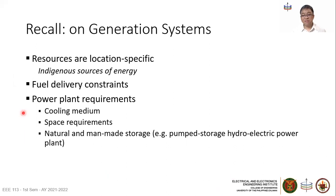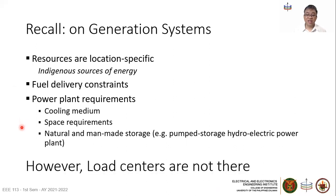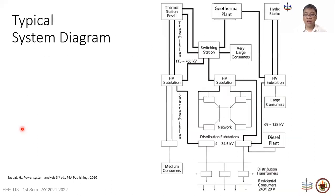We are aware that most power plants are located by the shore because they need large amounts of water as a cooling medium, among other reasons. However, load centers are not there. Starting with the system diagram here, multiple generators are interconnected to loads via transmission and distribution networks.